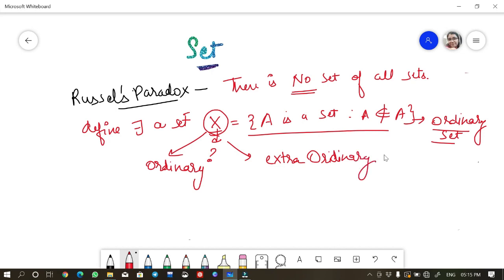If X is ordinary, this means that X does not belong to itself. But if X does not belongs to itself, it is also satisfying the property that is defined on X.